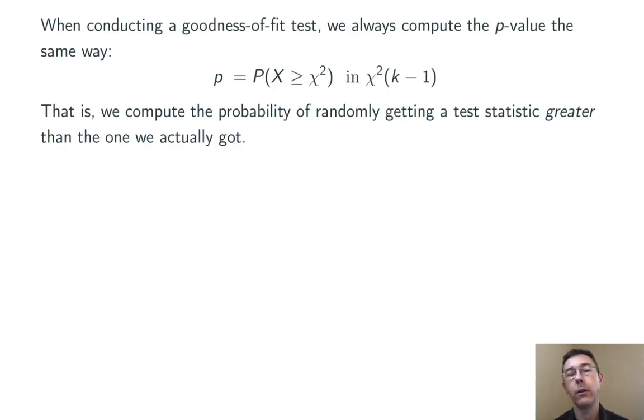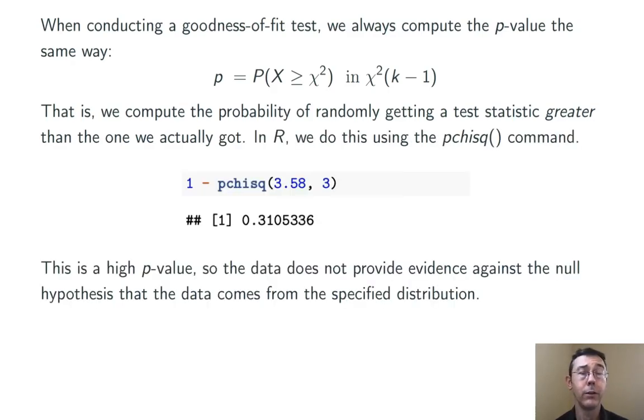We want to find the probability of randomly getting a value in chi-squared of k minus 1 greater than or equal to the one that we actually got. And there's many ways of computing a probability like that. You can do it using a table or a TI calculator, for example. I, of course, recommend R.